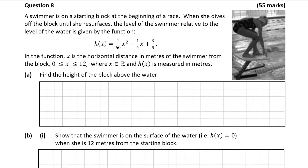This is an algebra and calculus question worth 55 marks. A swimmer is on a starting block at the beginning of a race, and when she dives off the block until she resurfaces, the level of the swimmer relative to the level of the water is given by the function h of x. In the function, x is the horizontal distance in meters of the swimmer from the block, where x is between 0 and 12 and x is a real number, and h of x is measured in meters.